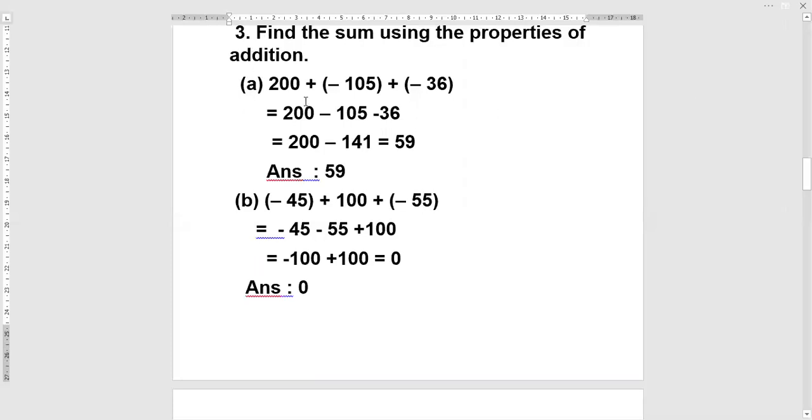Third sum is find the sum using the properties of addition. Here three integers are given: 200 plus minus 105 plus minus 36. It changes into 200 minus 105 minus 36. Minus 105 and minus 36, they are having the same sign. We will solve them first. Minus, minus, plus 105 plus 36. This is equal to 141.